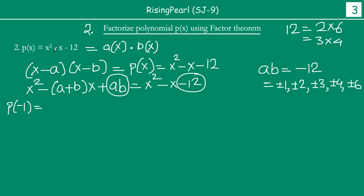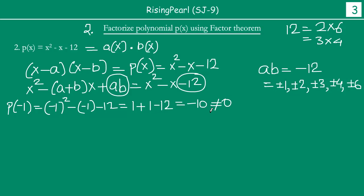p(−1) gives us (−1)² minus (−1) minus 12, which is 1 plus 1 minus 12, giving us 2 minus 12, which equals minus 10. This is not equal to 0. Notice that this time, unlike the previous example where all negative terms could be eliminated, here you have some positive terms and some negative terms, so you have to consider all the negative terms as well.